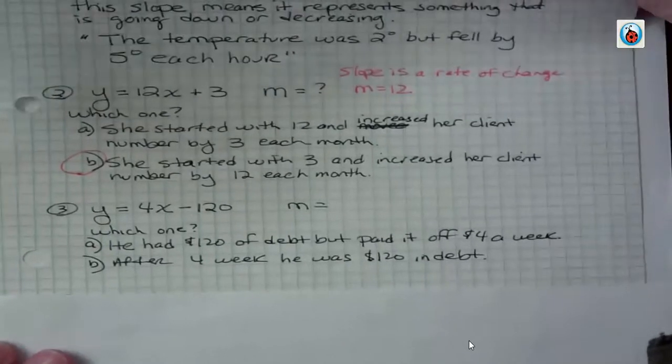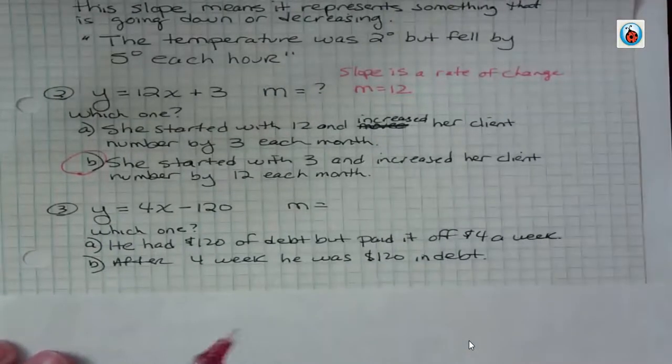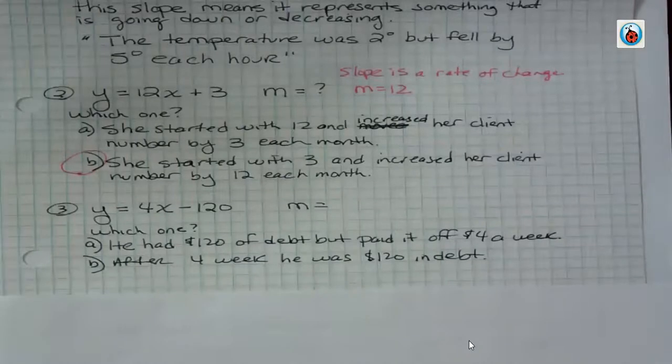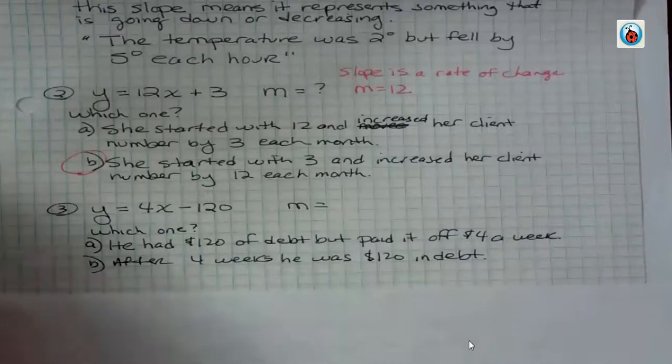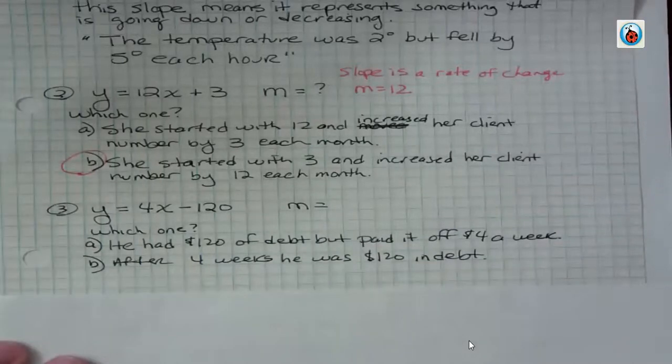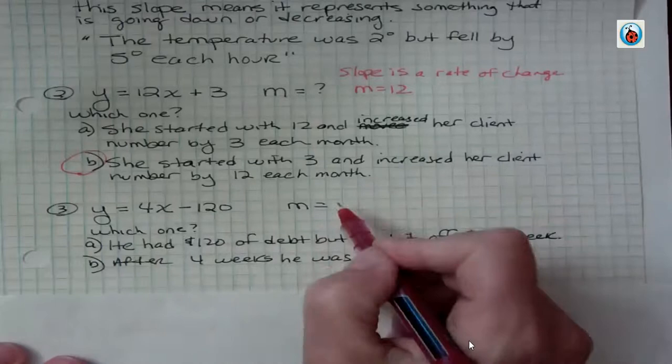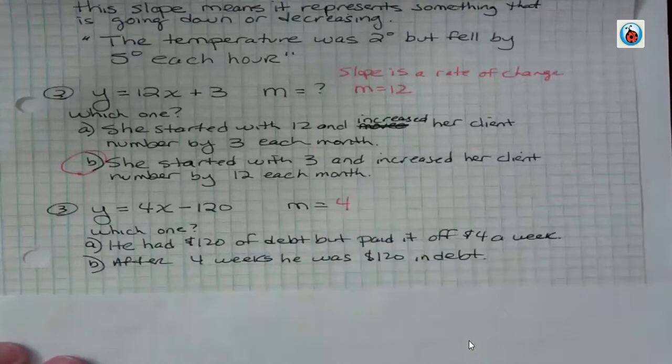Try number 3 on your own to first of all decide what the equation slope is and then decide which one of these statements makes sense. The slope is the number next to the x. It's the coefficient of the x term and that slope is 4, so your slope is 4. Which one of these would fit this equation?